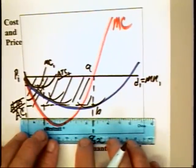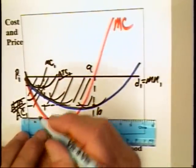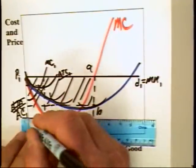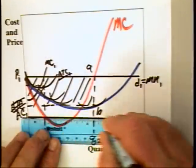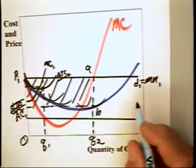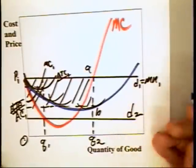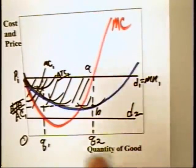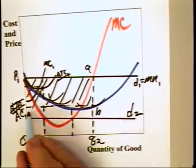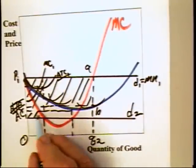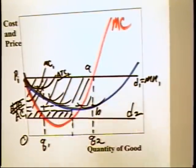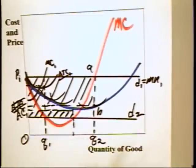And indeed, it's possible that the demand curve, the overall market supply can increase so much that the price moves all the way down to, say, D2, which of course means that the firm would be producing there and it would be incurring losses equal to that.